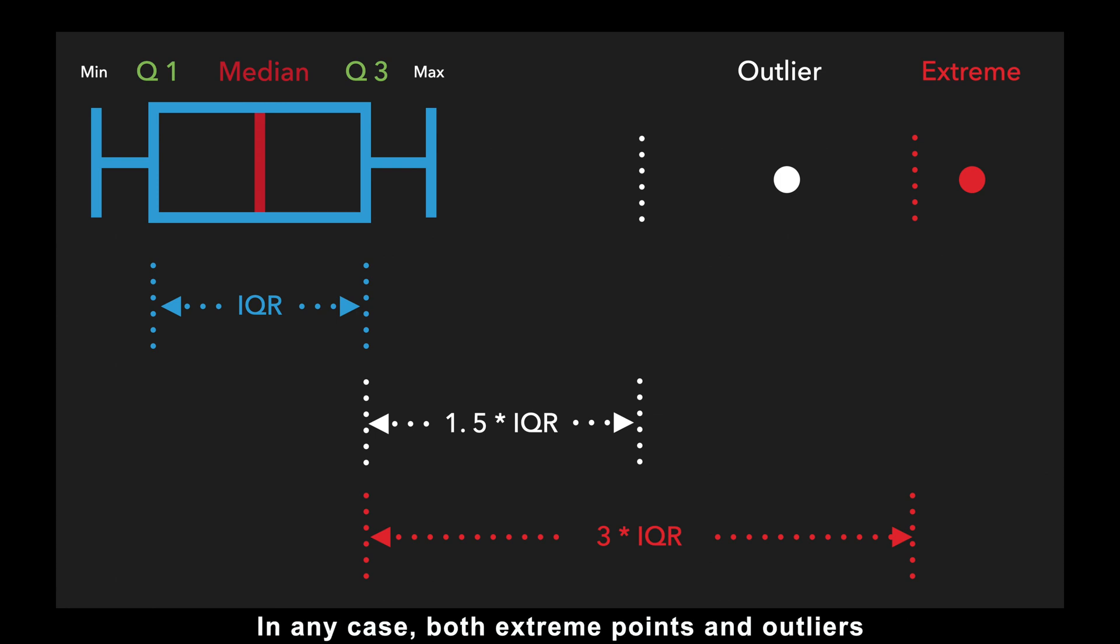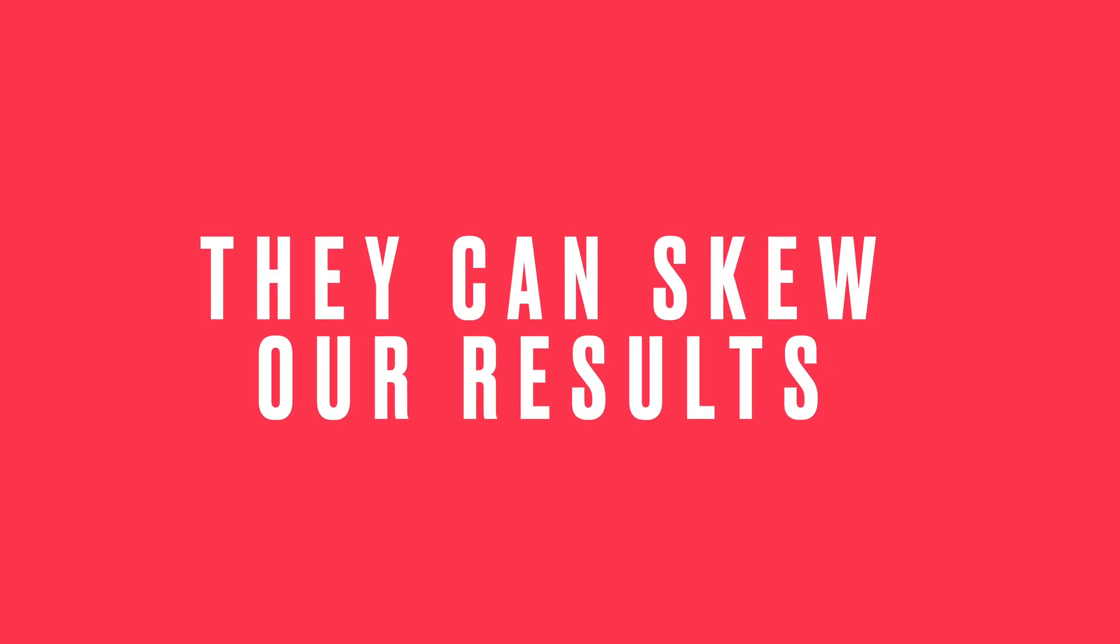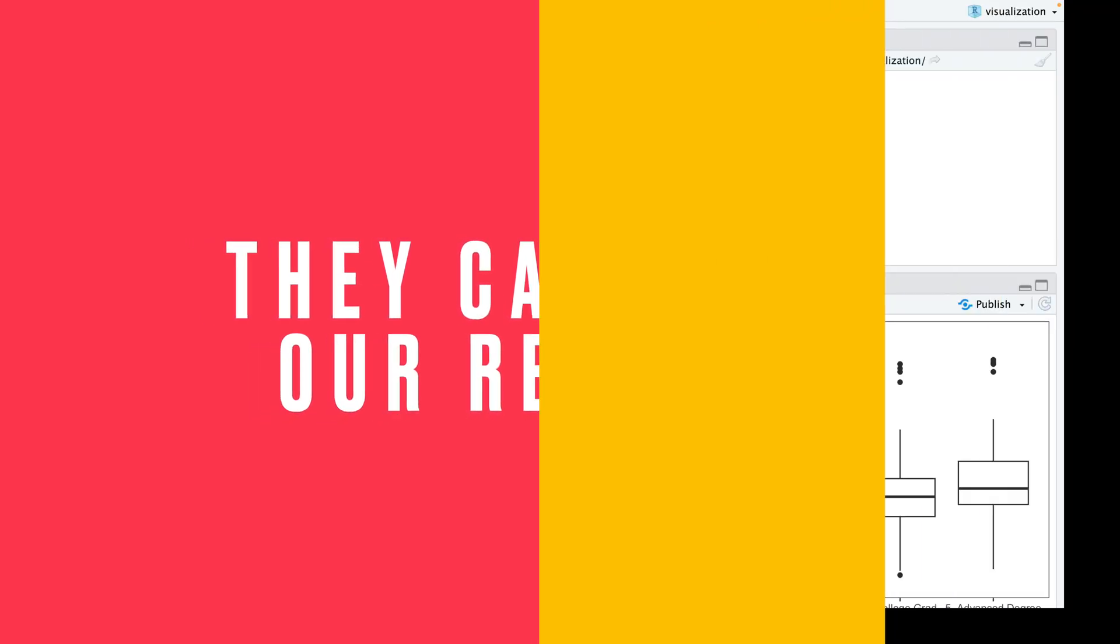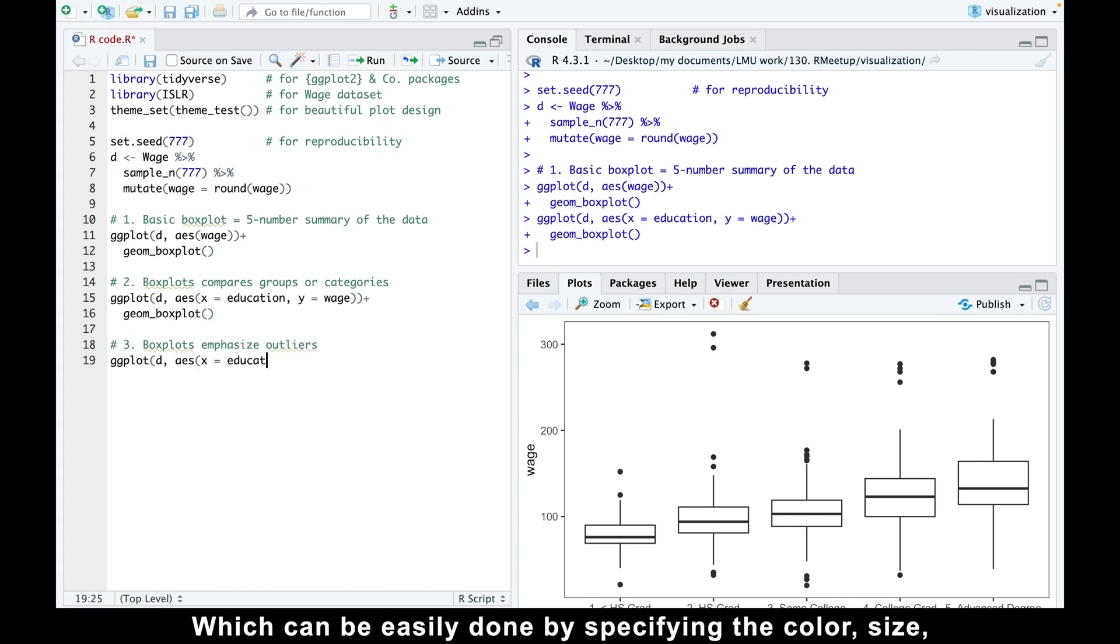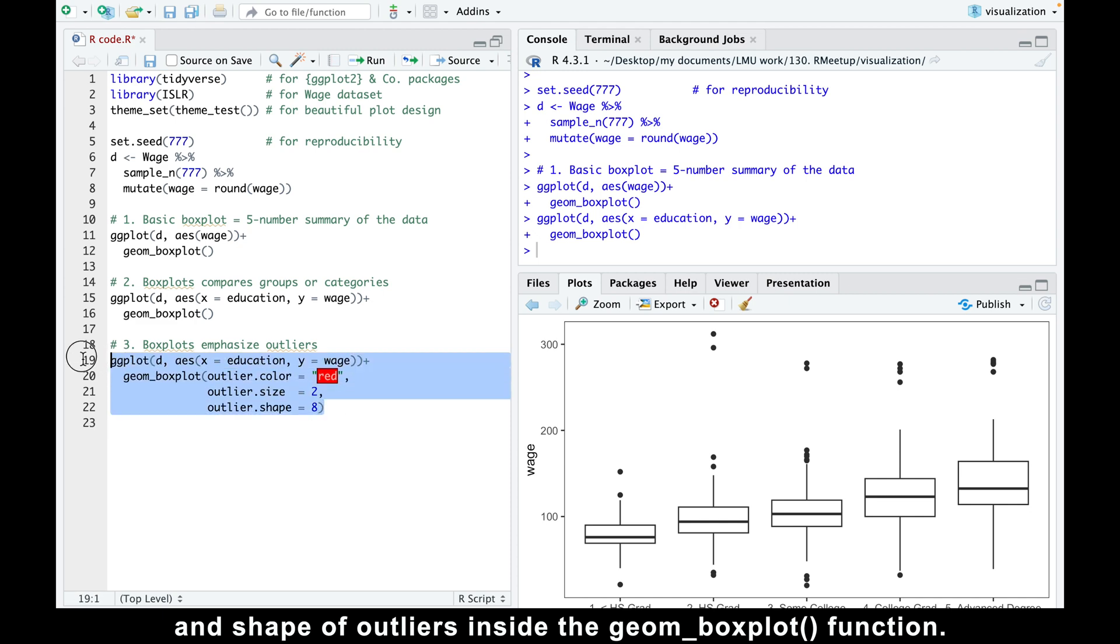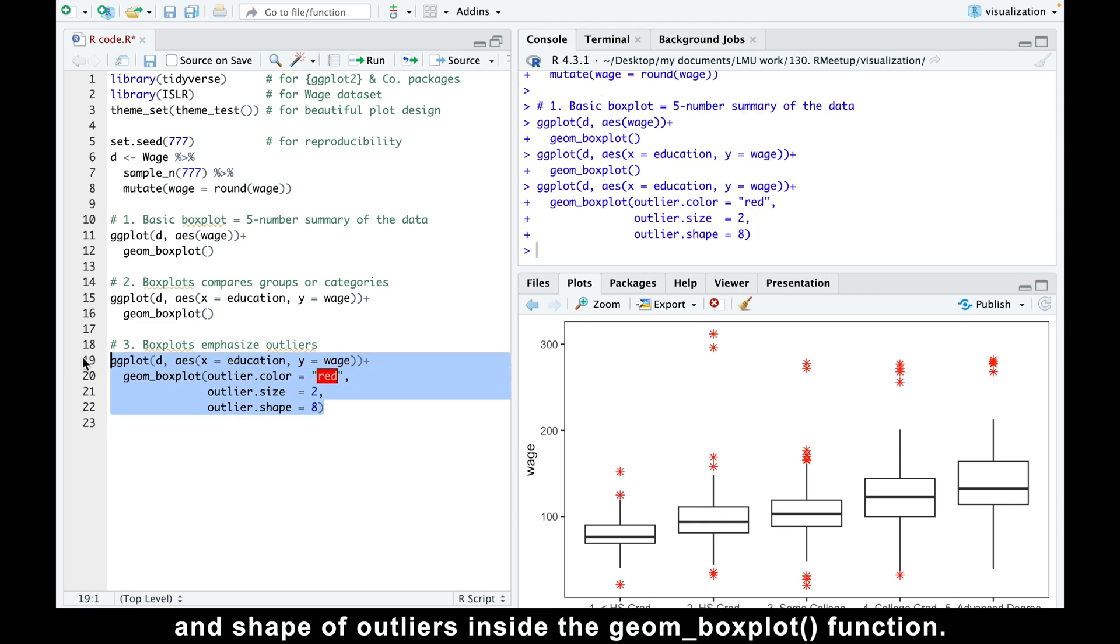In any case, both extreme points and outliers can skew our results and should therefore be emphasized, which can be easily done by specifying the color, size, and shape of outliers inside the geom_boxplot function.